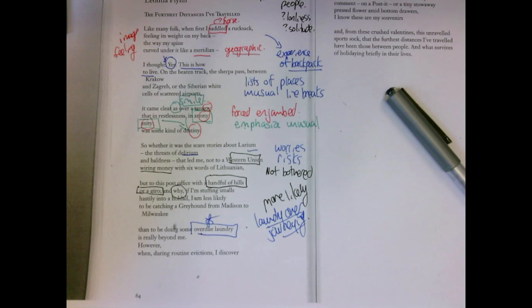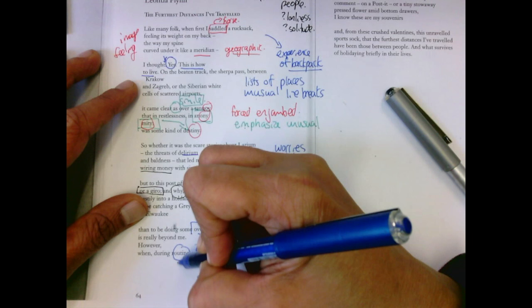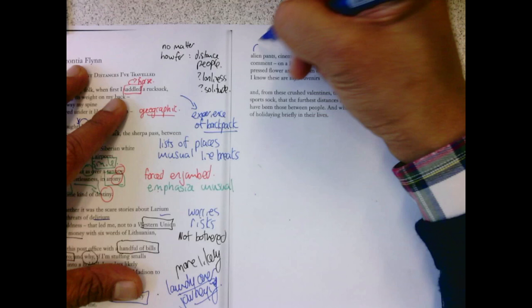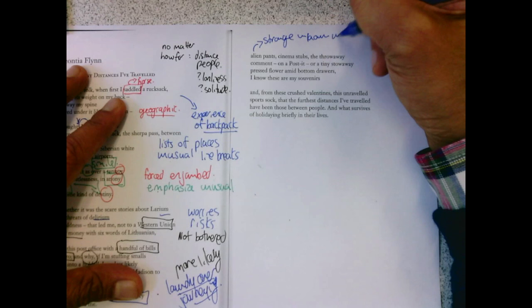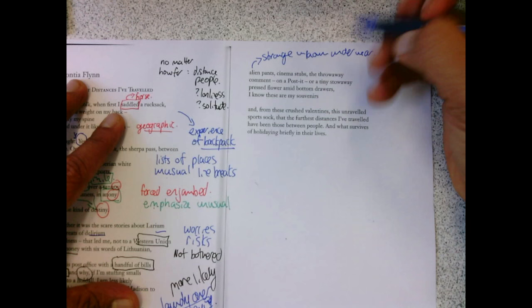However, when during routine evictions, so regularly she's kicked out, I discover alien pants. What a great alien. Does this mean strange unknown? Underwear. Alien pants. Cinema stubs. The throwaway comment on a post-it.